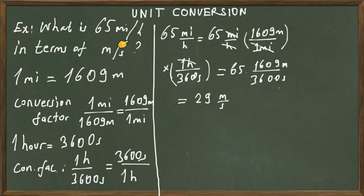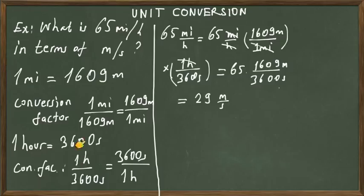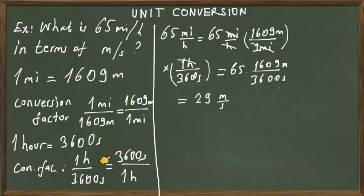The next conversion is between hours and seconds. One hour equals 3600 seconds, because one hour is 60 minutes and each minute is 60 seconds. Again we have two conversion factors: one hour divided by 3600 seconds is used to convert from seconds to hours, and 3600 seconds divided by one hour is used to convert from hours to seconds.